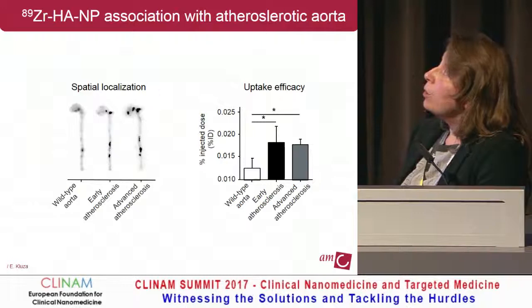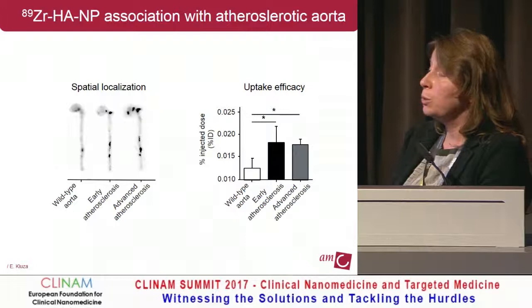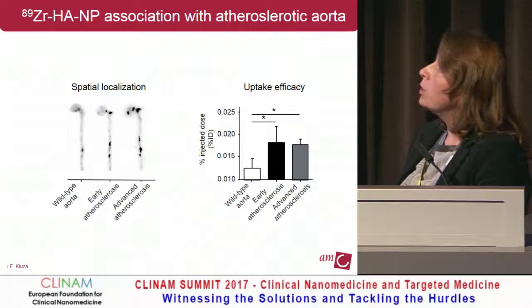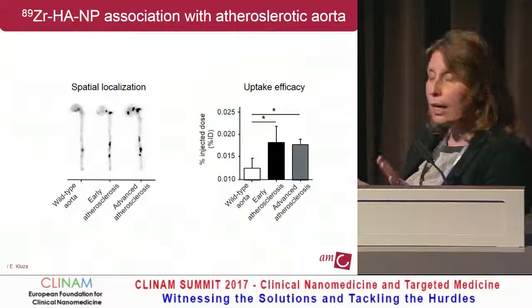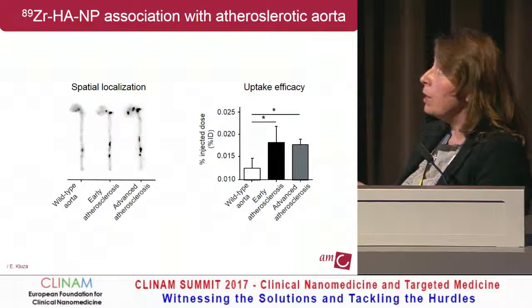For macroscopic assessment — whether our zirconium-labeled nanoparticles can detect lesions — here is the autoradiography data for wild-type and atherosclerotic aortas. You can see hotspots at the places where you'd expect lesions: in the arch and at bifurcations. Once you quantify the signal with gamma counting, you see a significantly higher signal in the atherosclerotic aortas.